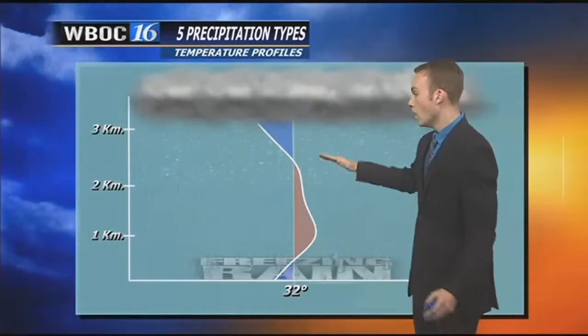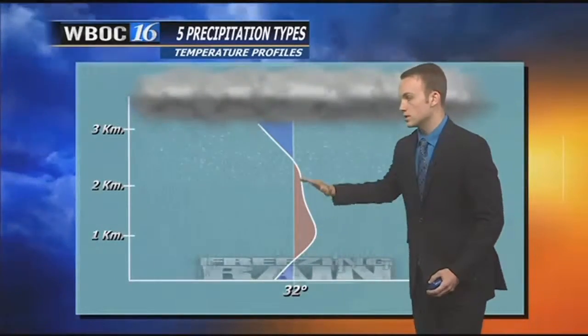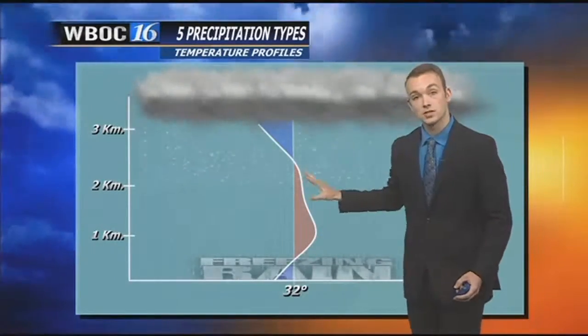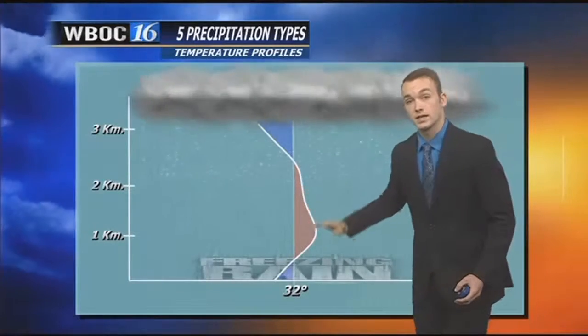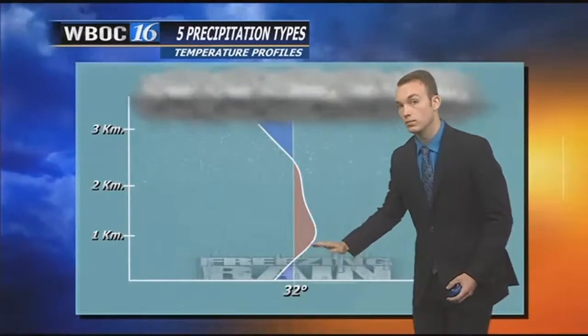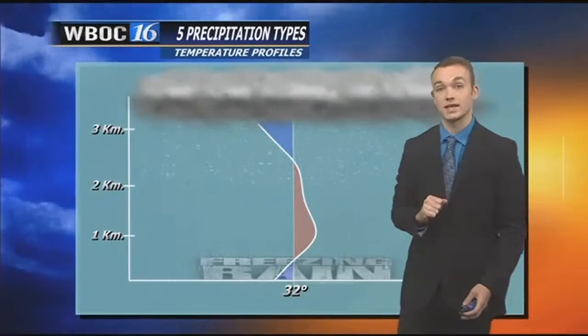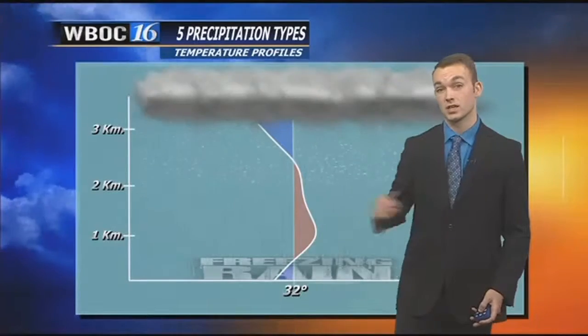Freezing rain's a little different. You see a thick layer of warmer temperatures that melts the snow. Then at the immediate surface, you see temperatures below freezing that result in that glaze of ice.